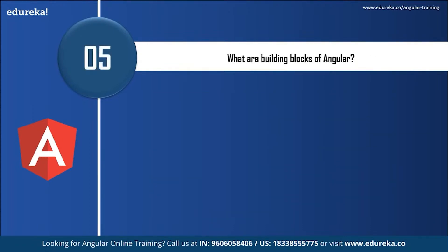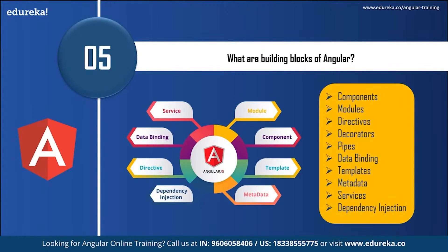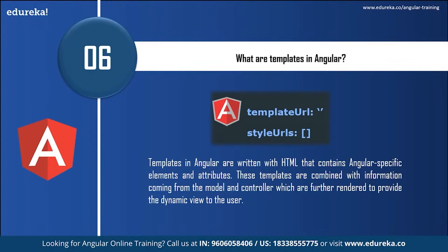The next topic is building blocks of Angular. Angular is built using components, modules, directives, decorators, pipes, data binding, templates, metadata, services, and dependency injection. What are templates in Angular? Templates in Angular are written with HTML that contains Angular-specific elements and attributes. These templates are combined with information coming from the module and controller, which are further rendered to provide the dynamic view to the user.